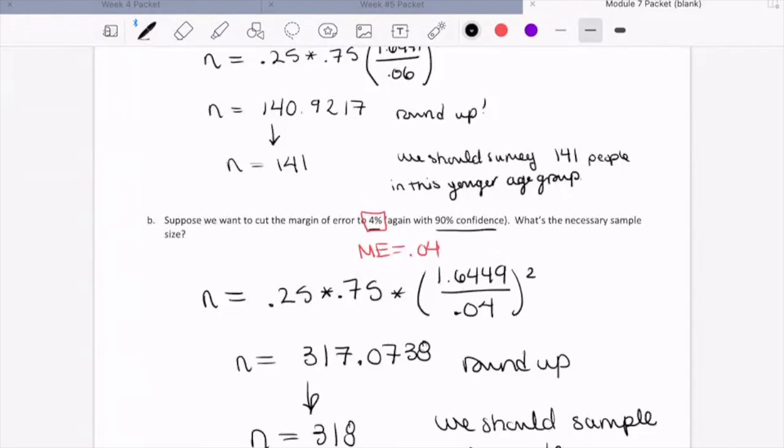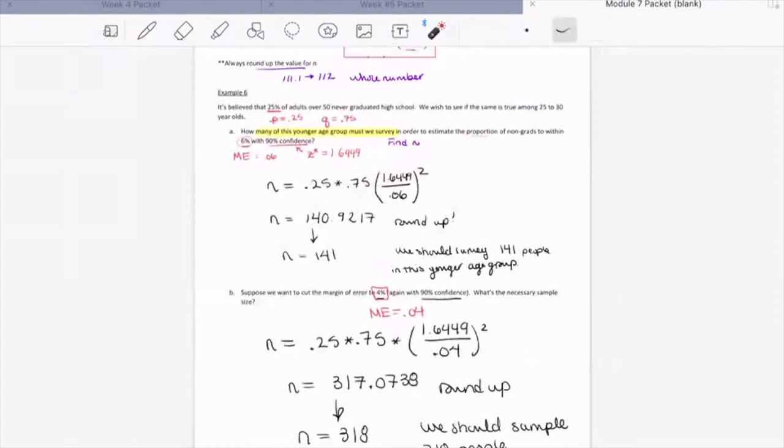So if we have a smaller margin of error, 4%, then we need a larger sample. But if we have a larger margin of error, so that's okay to have more error in our interval, then we don't need to survey as many people. So we go from 141 to 318.